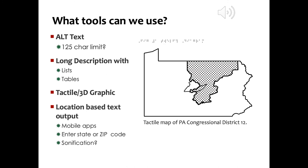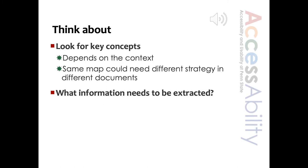They each have their advantages, but some limitations also. By the way, the image above is a tactile version of our congressional district, District 12. This was converted to an embossed graphic with raised lines and the dots are texture indicating where the district is. A lot of your choices involve determining what's most important for the context of the map. The same image might only need a simple description in an introductory course, but a more detailed description in another course.